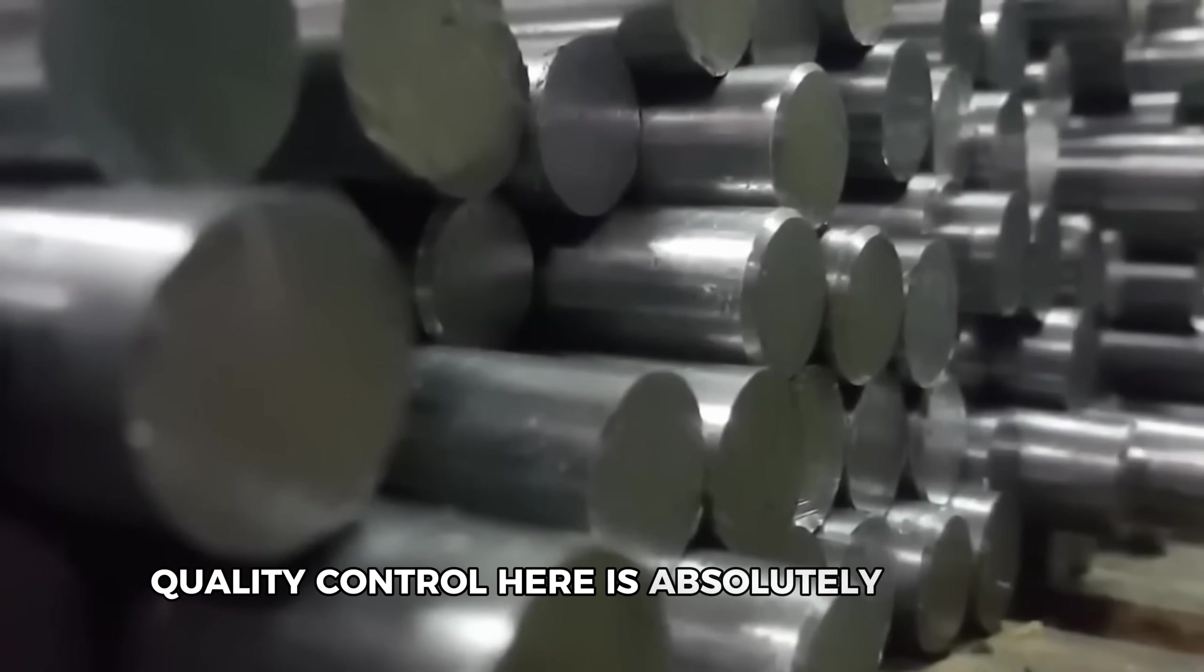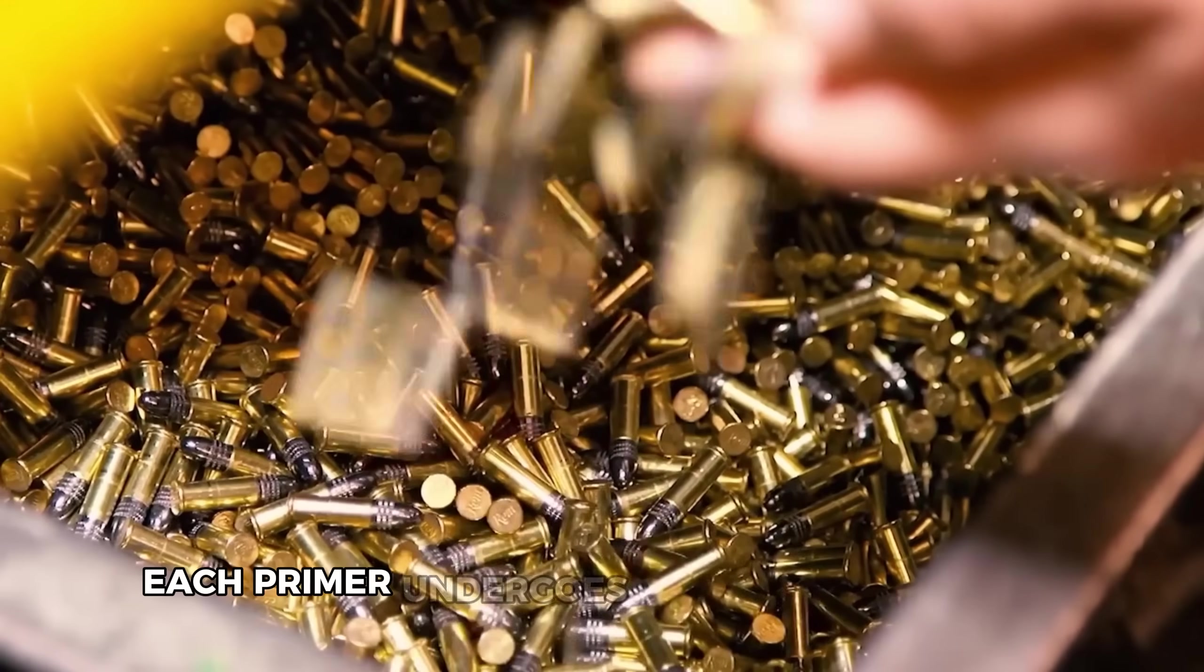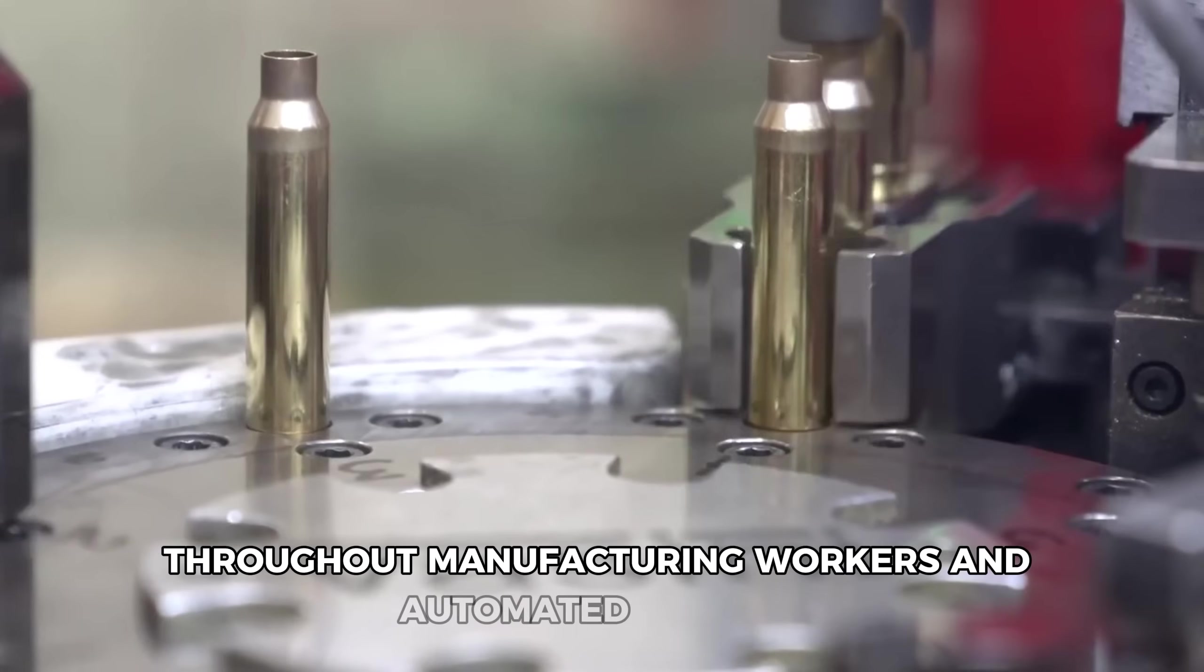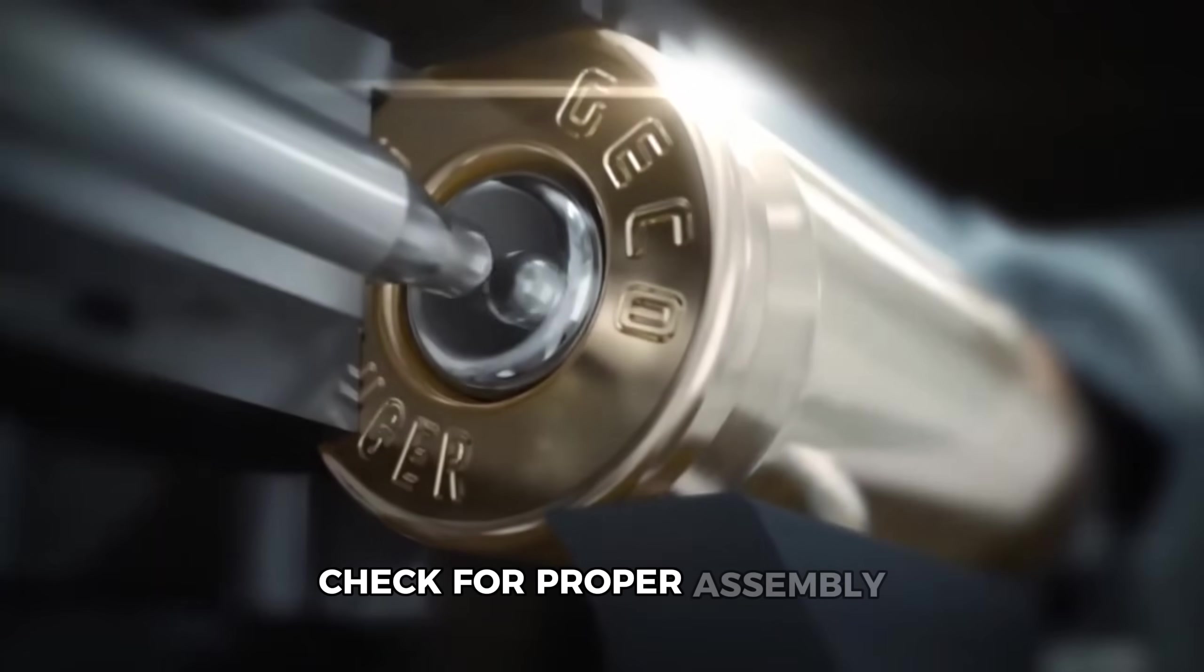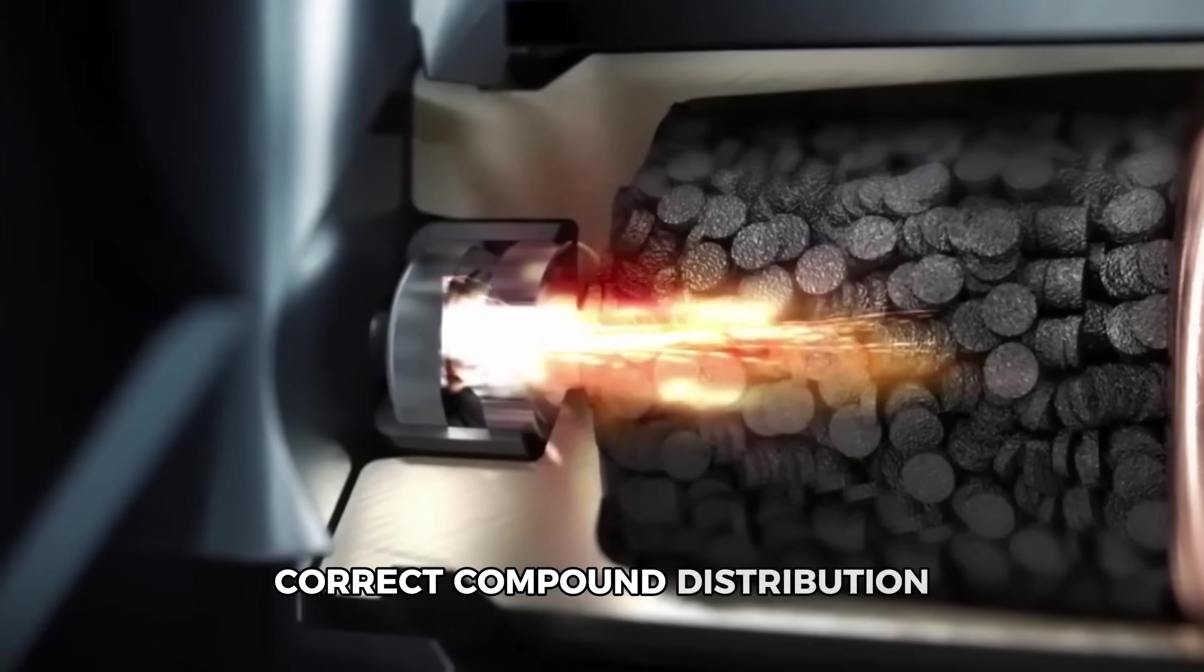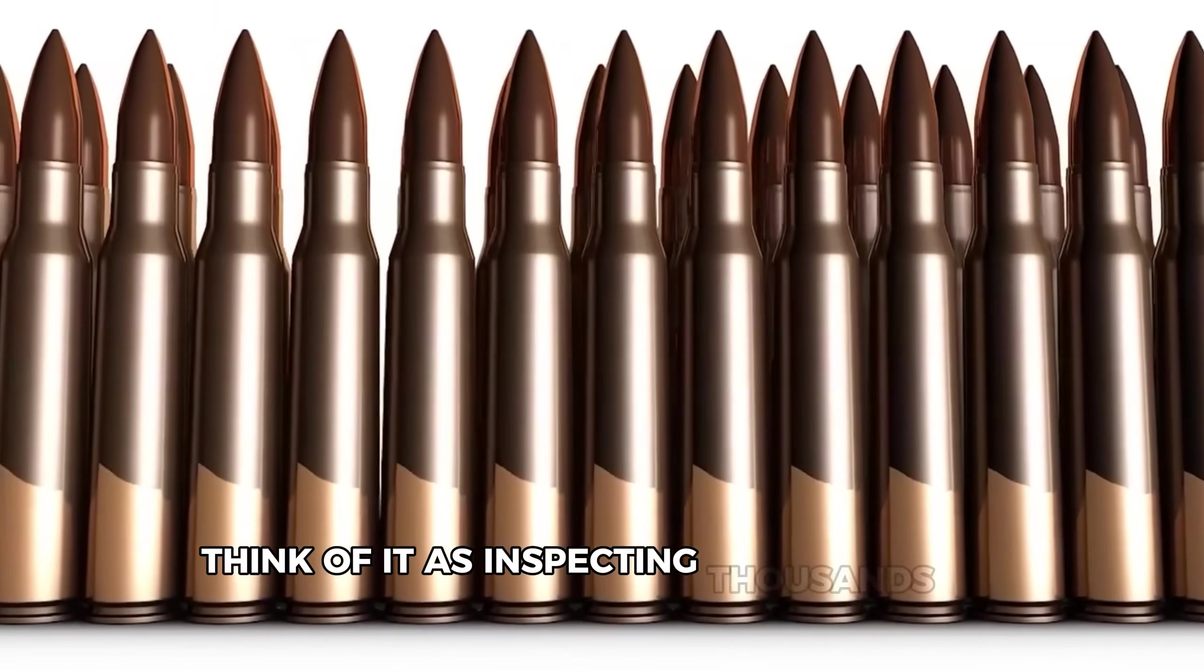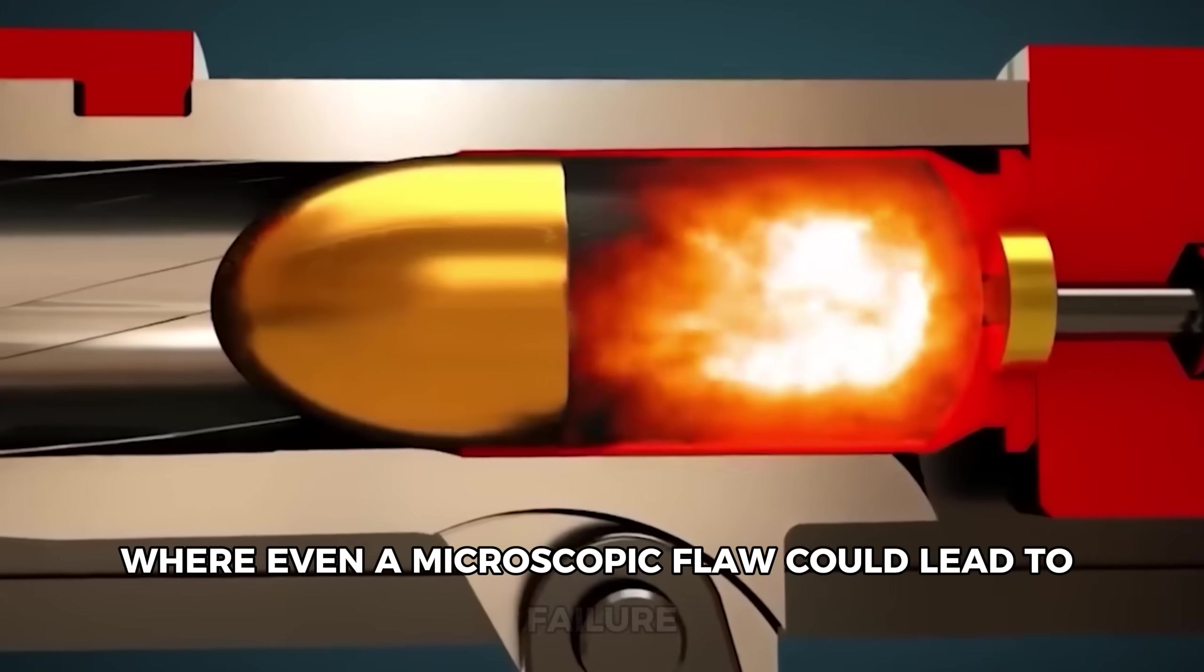Quality control here is absolutely critical. Each primer undergoes multiple inspections throughout manufacturing. Workers and automated systems check for proper assembly, correct compound distribution, and perfect anvil positioning. Think of it as inspecting thousands of miniature explosive devices where even a microscopic flaw could lead to failure.